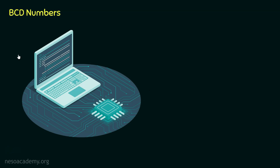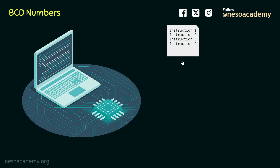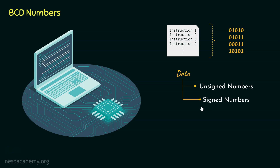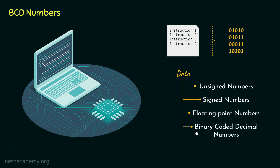In a digital computer, everything is represented using ones and zeros. A program is nothing but a group of instructions, and each instruction can be represented by sequences of ones and zeros. Similarly, data can also be represented using sequences of ones and zeros. Data can be of many types: unsigned numbers, signed numbers, floating point numbers, and then there are binary coded decimal numbers, or BCD numbers.